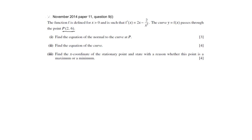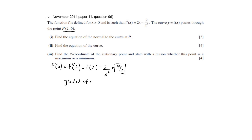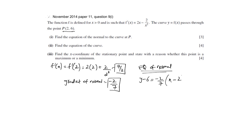The f prime of x expression has been given to you. You want to find f prime of x at x equals 2 — this gives you the gradient of the tangent to the curve at P. In order to find the gradient of the normal, it will be the negative reciprocal, minus 2 over 7. The equation of the normal would be y minus y1 equals gradient times (x minus x1). If you rearrange this equation, you get 7y plus 2x equals 46. That's your equation of the normal.